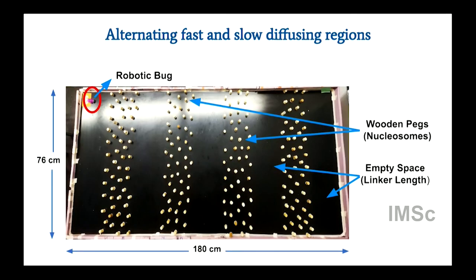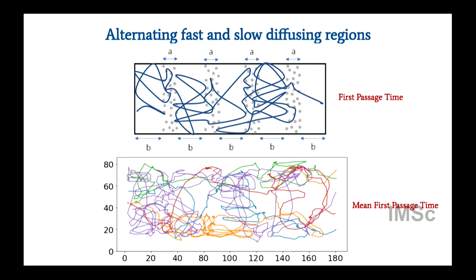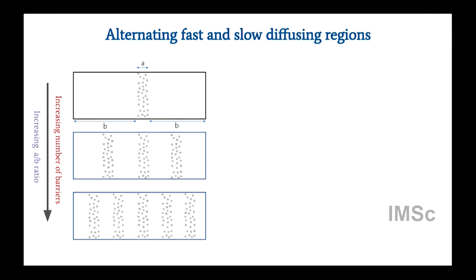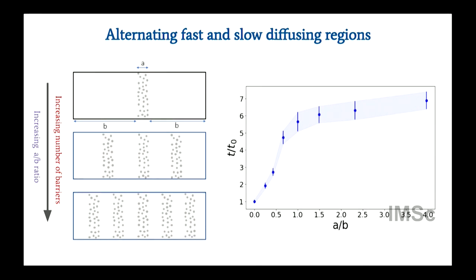Here is the setup: a table with a free segment and a segment filled with small barriers — this is my entropic barrier, a slow region — the bug can enter but traverses it slowly. You start the bug at one end, record the time to reach the opposite end, repeat many times, and calculate mean first passage times. Starting with one barrier strip and increasing to three, five, and so on, the mean first passage time increases monotonically with increasing barrier number, exactly as our calculations predicted.